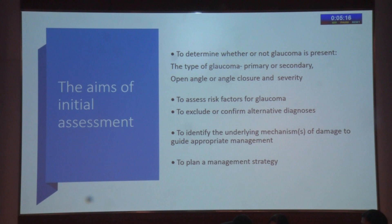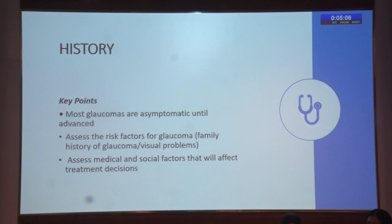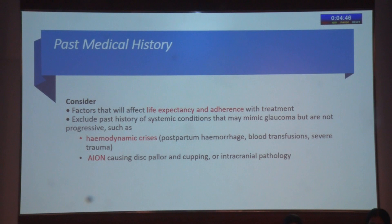The initial assessment is divided into three phases: history, examination, and investigations. In history, since most glaucomas are asymptomatic, we focus on risk factors like family history and refractive errors, and assess medical and social factors affecting treatment decisions. In past medical history, consider factors affecting life expectancy and treatment adherence, and exclude systemic conditions like hemodynamic crisis, acute blood loss, postpartum hemorrhage, or severe trauma. Anterior ischemic optic neuropathy causes disc pallor and cupping, as can intracranial pathology — these conditions mimic glaucoma but are not progressive.